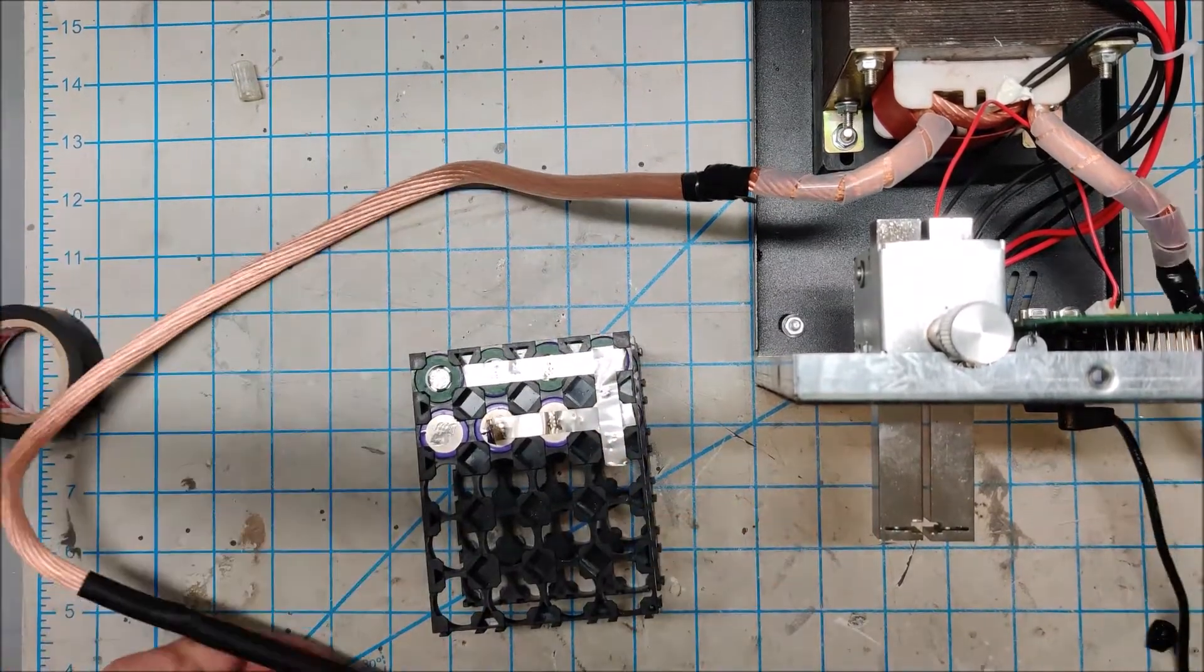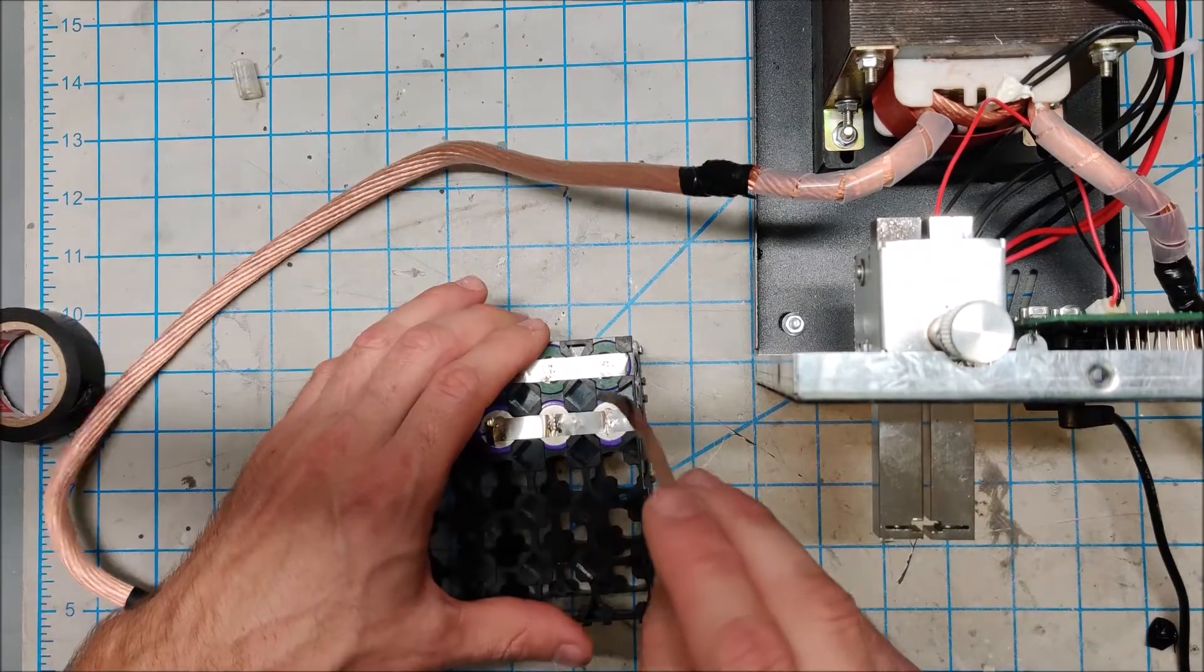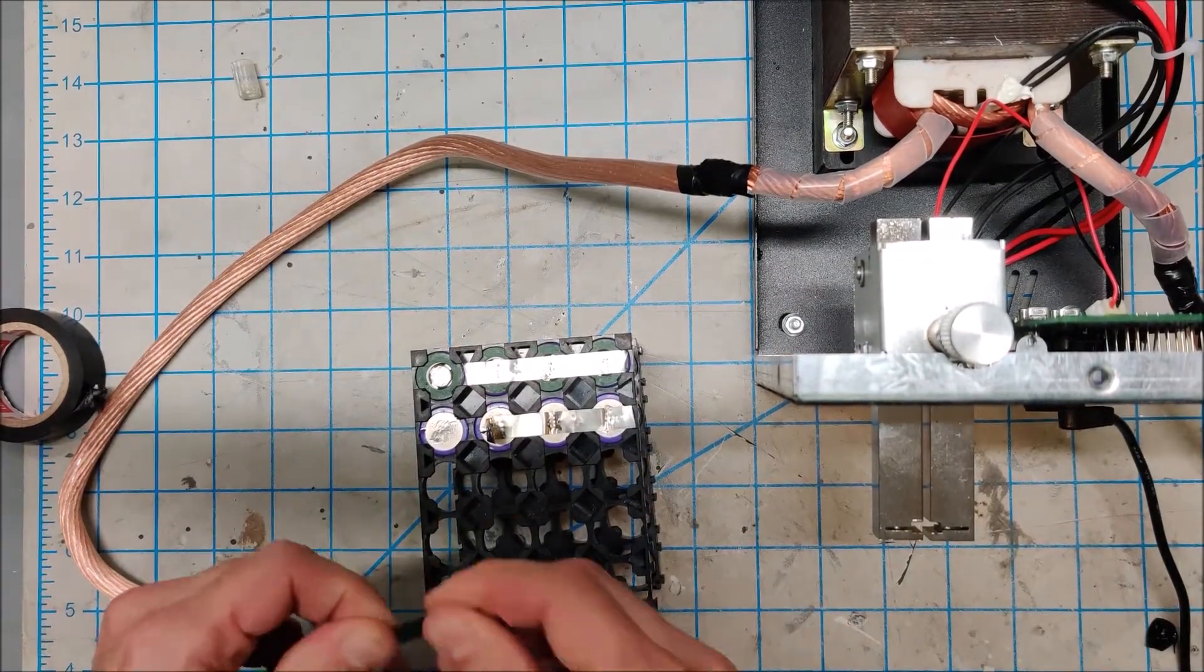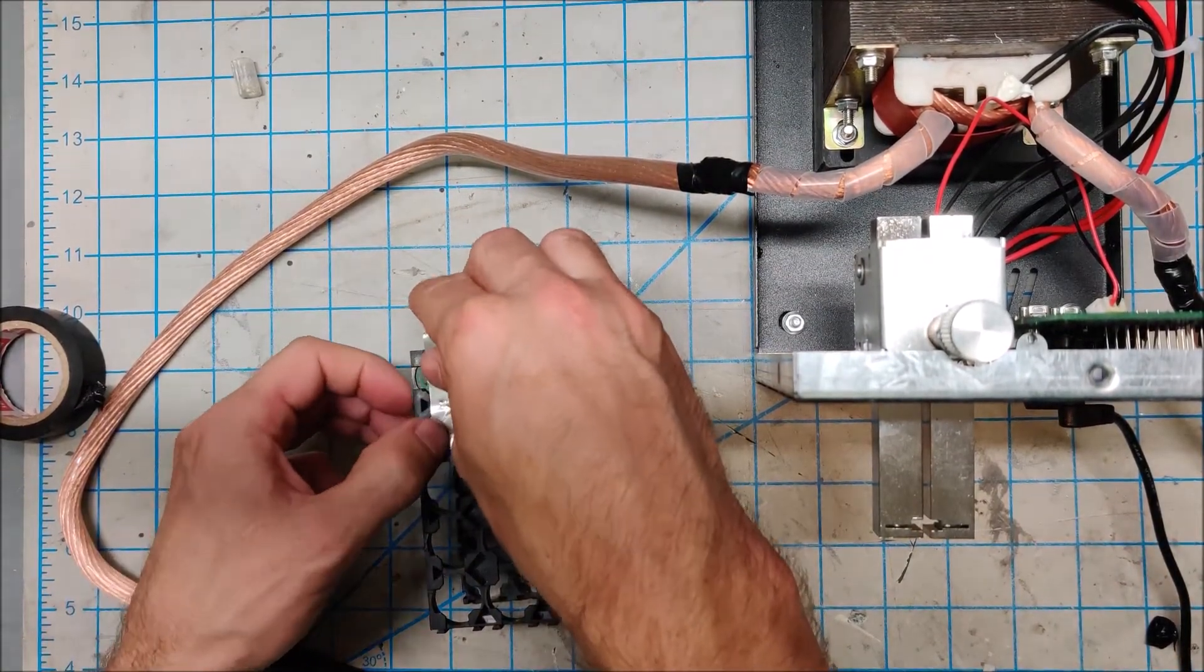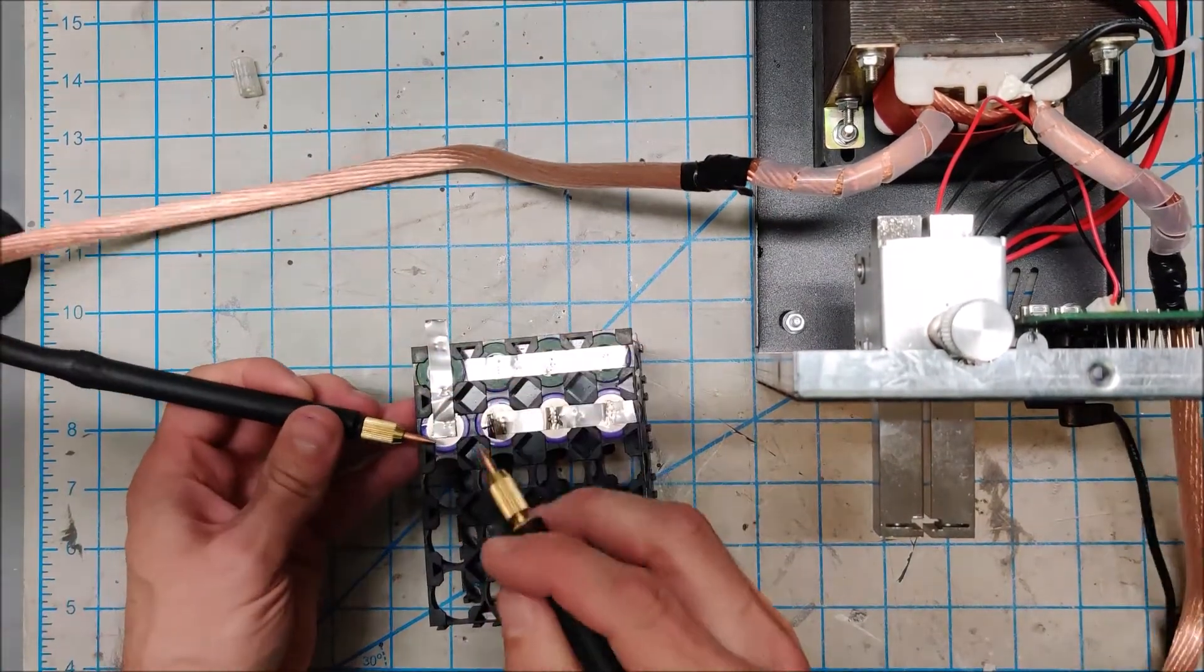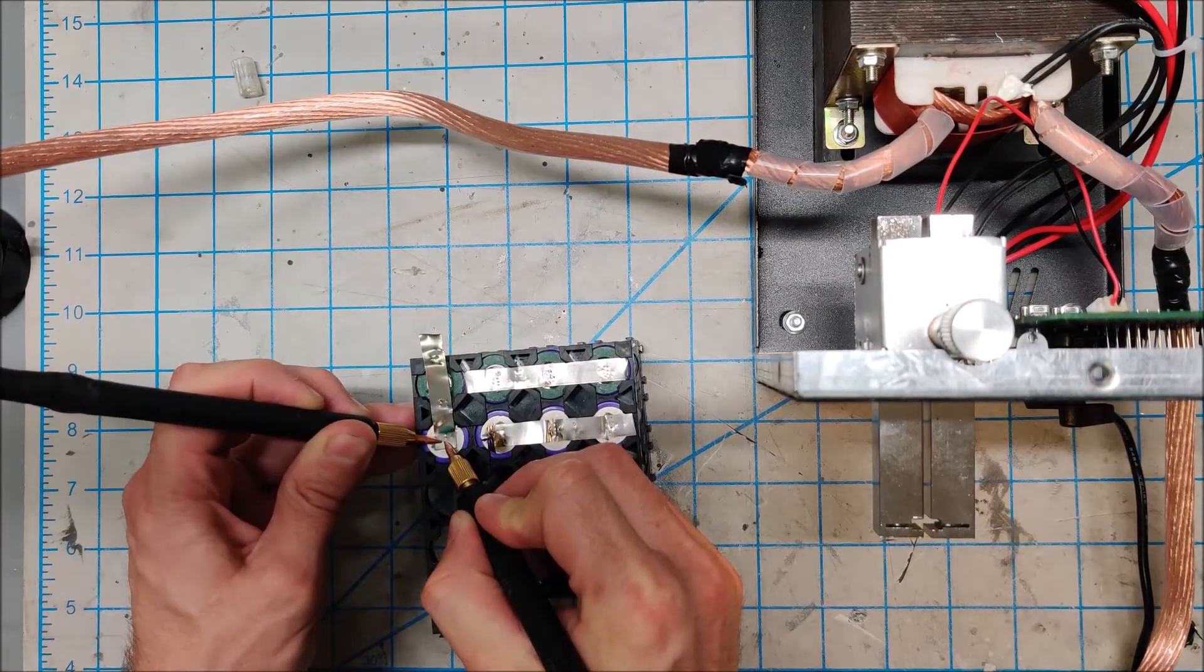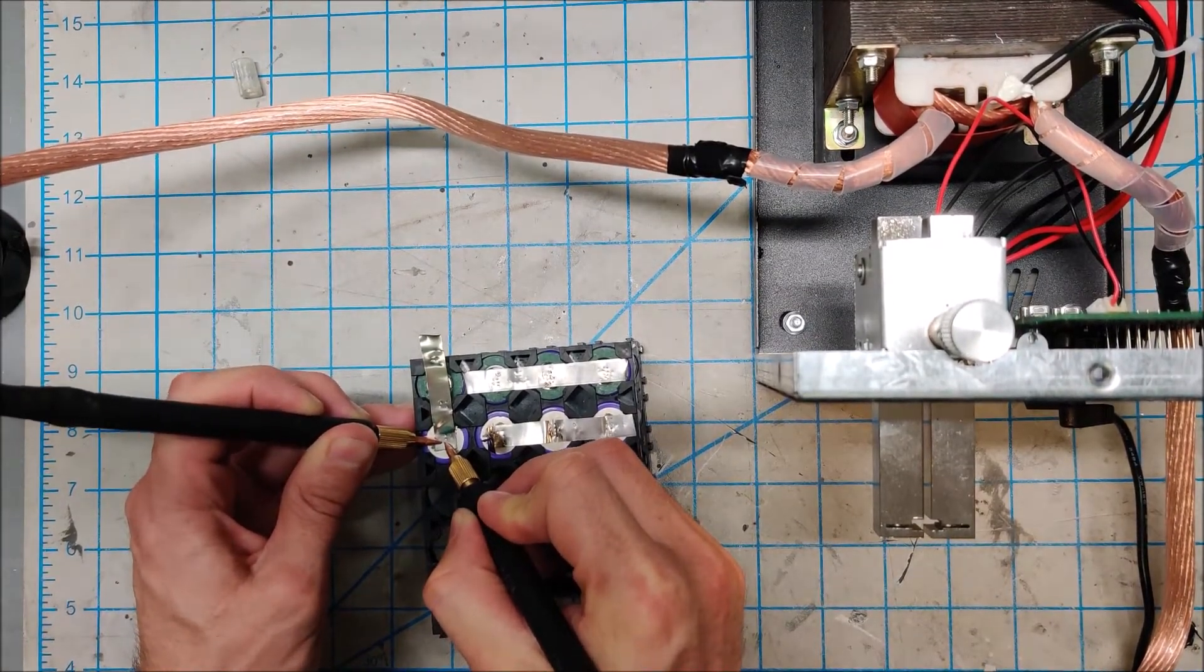Spot weld... peeled off like butter. The 0.15 just does not spot weld. On a battery it's a little better, but still I think the PCB spot welder is better.